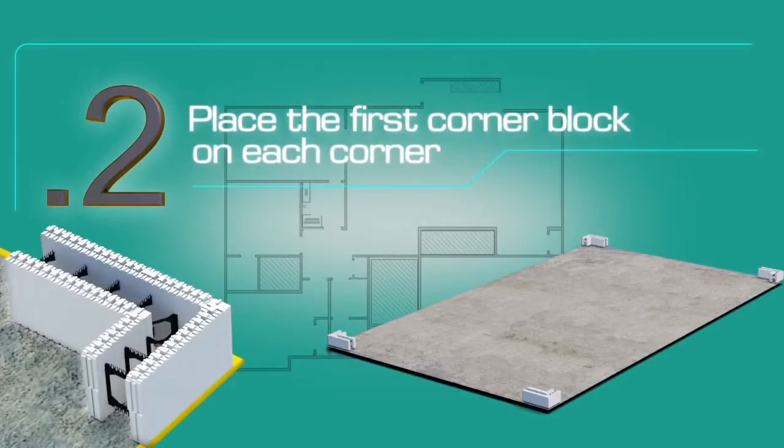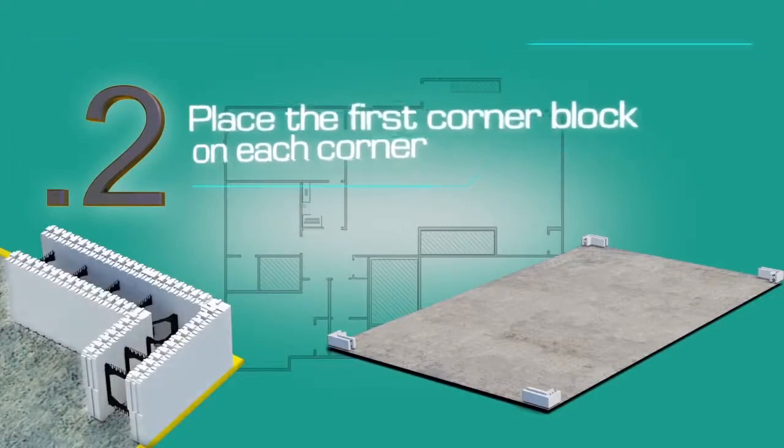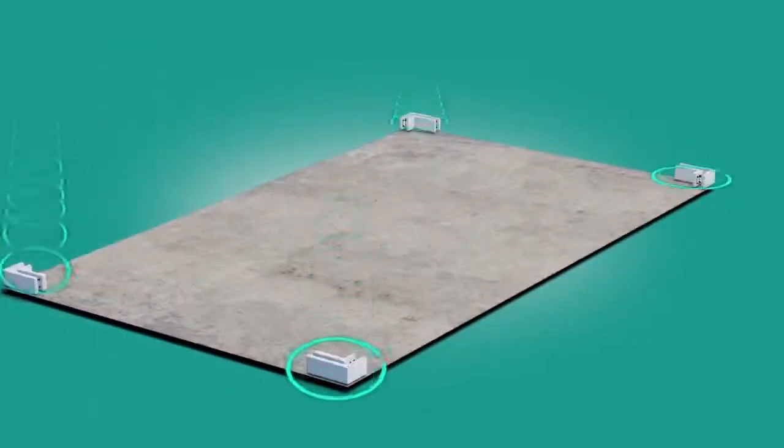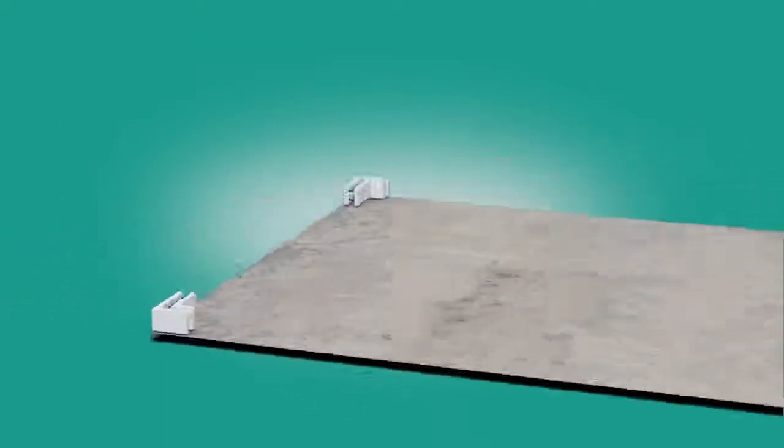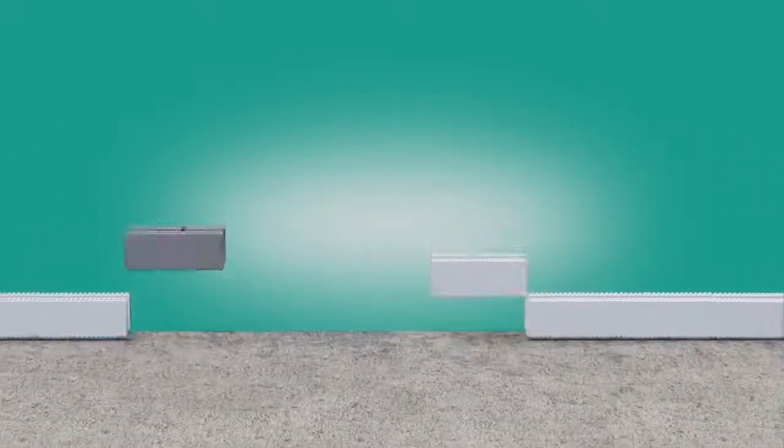Place the first corner blocks on each corner. Then lay the straight blocks toward the center of each wall segment.